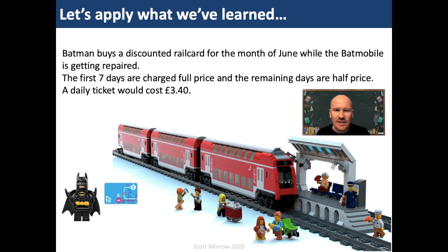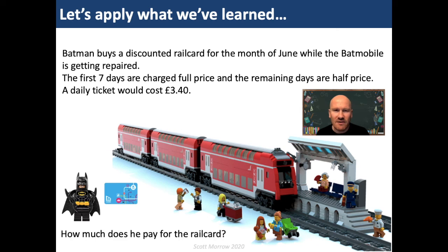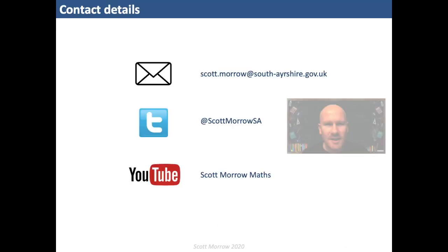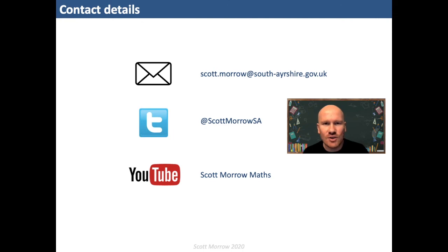The last thing I'm going to ask you to do today is apply what we've learned. As a class, discuss, analyse and solve the following problem: Batman buys a discounted rail card for the month of June while the Batmobile is getting repaired. The first seven days are charged full price and the remaining days are half price. A daily ticket would cost £3.40. How much does he pay for the rail card? Thanks for joining me again today. I hope you enjoyed that. If you've got any questions or you'd like to share your solutions you can contact me at scott.morrow SA. Next week we're going to be analysing and solving problems that involve mixed operations. I hope you can join me then.